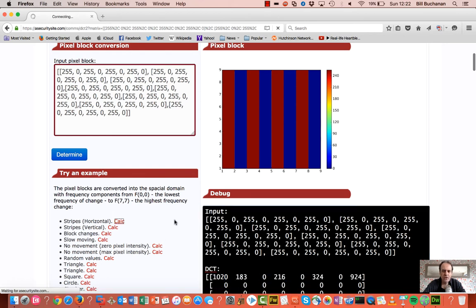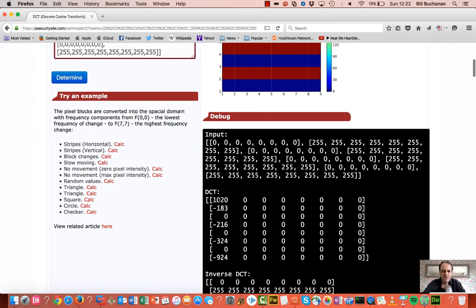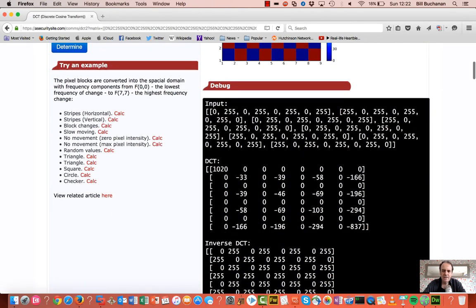When we look at our horizontal one, the values are matched to the column. If we take a checkerboard pattern we'll find that the strongest element is actually the one at the bottom here, and that's the one measuring the highest rate of change.